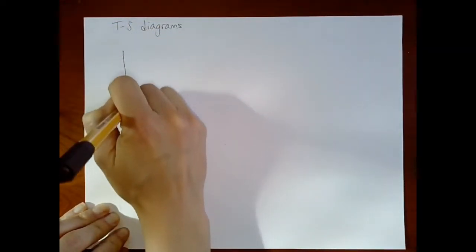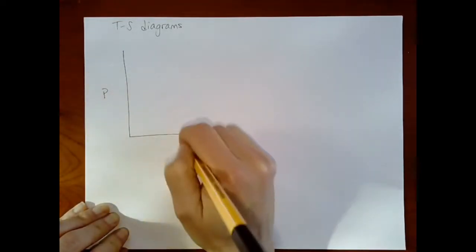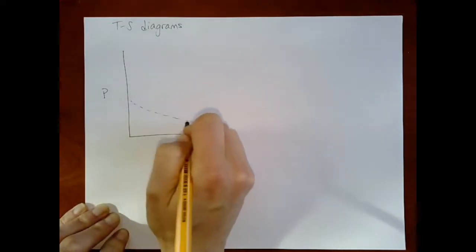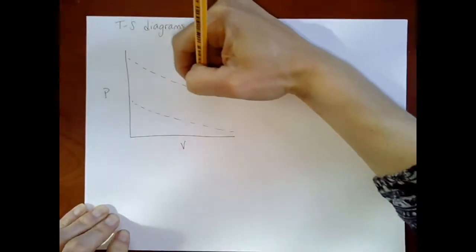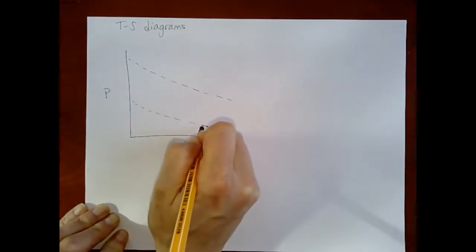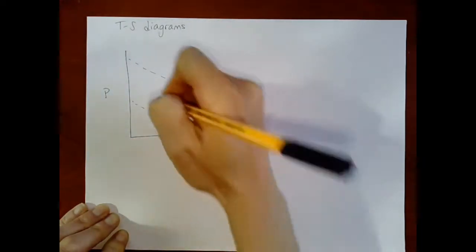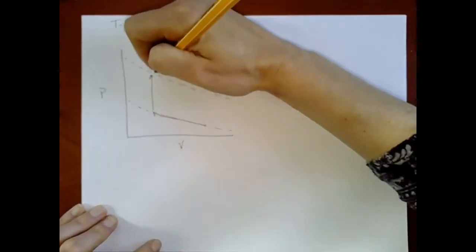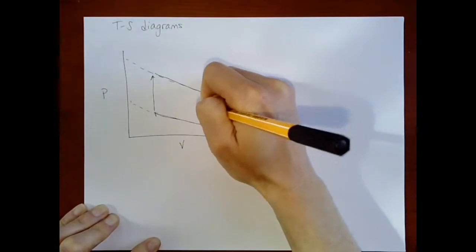So let's remind ourselves what the Sterling cycle is using a PV diagram. The Sterling cycle is two isothermal steps linked by two constant volume steps. So we have isothermal compression, constant volume heating, isothermal expansion, and constant volume cooling.